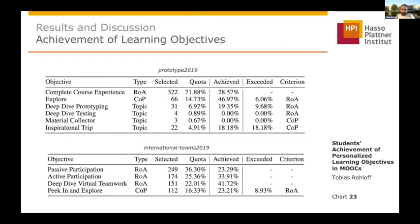Looking at achievement of these objectives in both courses: the most selected objectives in both courses were the ones with an included record of achievement or graded certificate, but the other objective types also had a notable number of users. We are quite happy with the achievement rates — for example, 28 percent for the record of achievement objective in the first course. Knowing the typical completion rates in MOOCs, we are quite satisfied with these numbers.